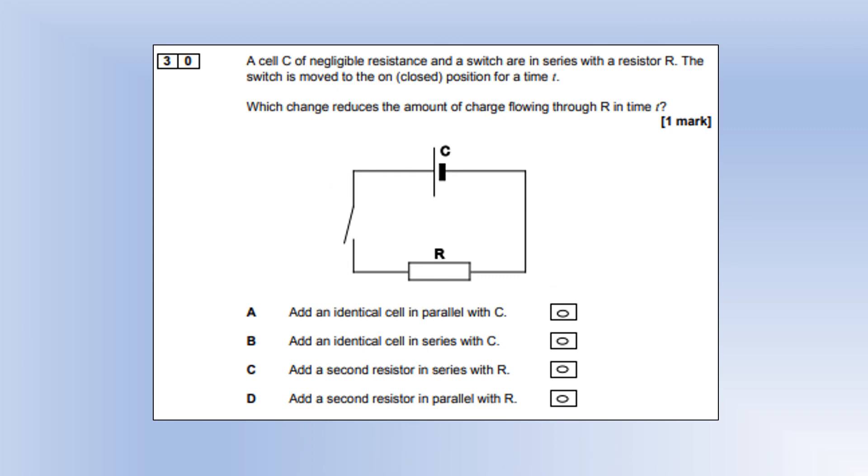A cell of negligible resistance and a switch are in series with a resistor. The switch is moved to the closed position for a time T. Which change reduces the amount of charge flowing through the resistance? Putting a cell in parallel, that has no effect if we're ignoring the resistance of the cell. Adding a cell in series would increase the number of charges, not decrease. Adding a resistor would decrease the current and therefore would decrease the number of charge. Adding a resistor in parallel would make no difference to the charge going through R.